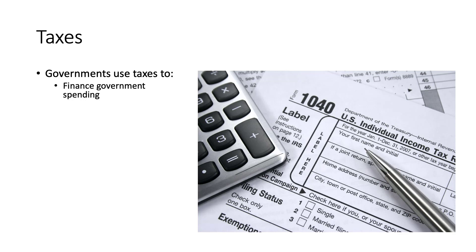Government spending can be allocated towards education, infrastructure like roads, parks, and national parks as well. Taxes can also be used to discourage bad behavior. In the US we generally refer to these as sin taxes, and these will be assessed on different items or products like alcohol and cigarettes.